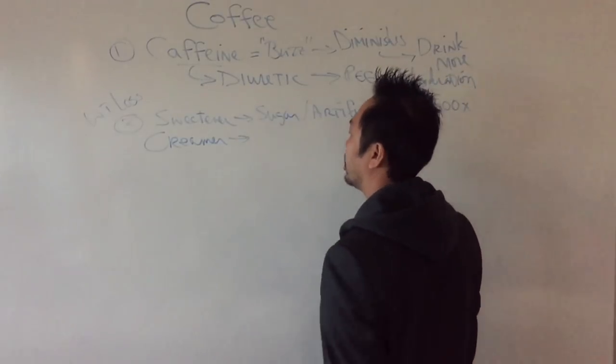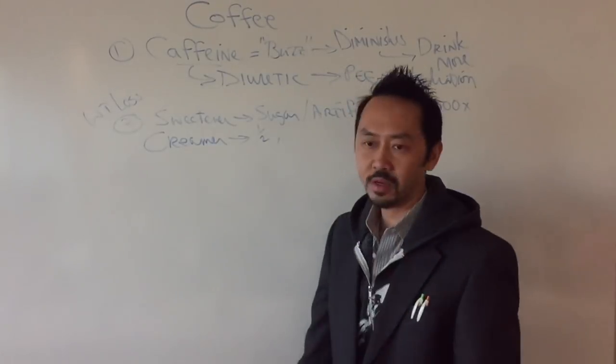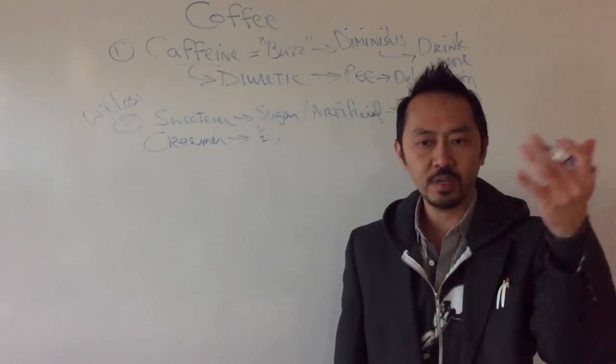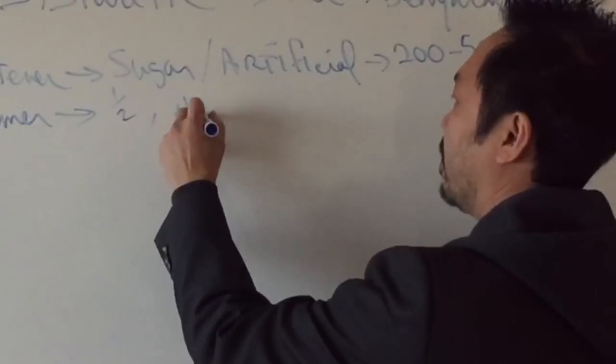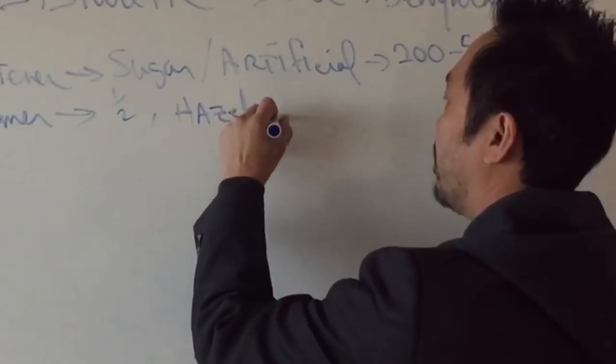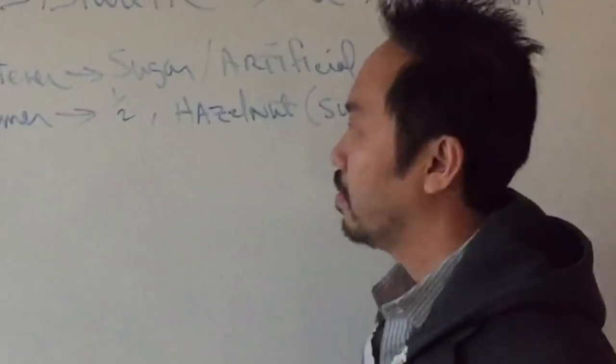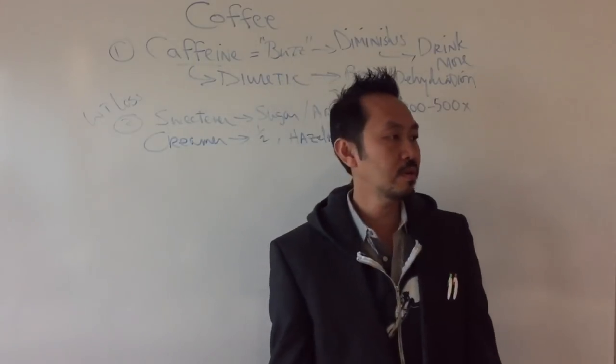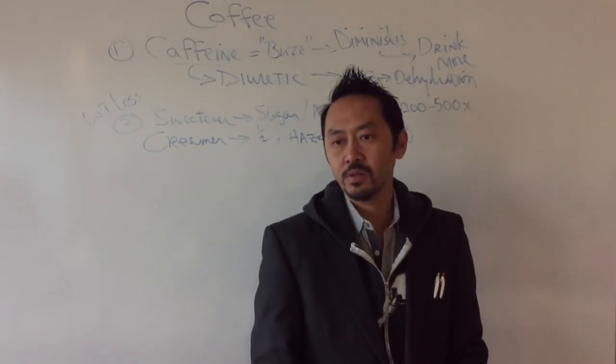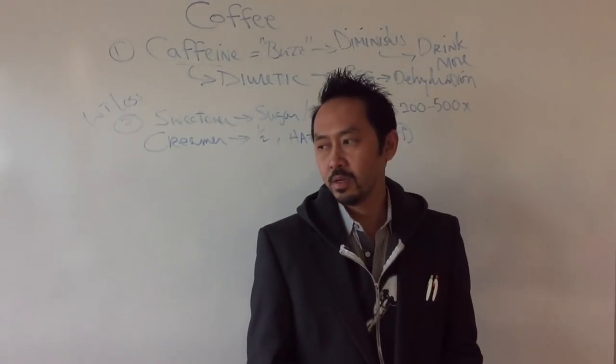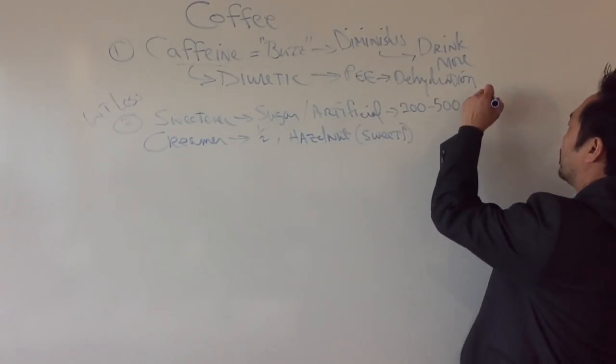And then you have your creamer, and that can be your half and half. But most of the time it's powder - that artificial stuff, that instant creamer, the hazelnut flavorings, amaretto flavorings. So you're adding a lot more chemicals, and it's also increasing the sweetness, which is going to end up driving your sugar cravings. These artificial sweeteners don't satisfy your sweet craving, they actually drive it. So now you're going to be looking for snacks.